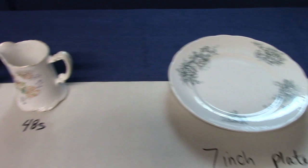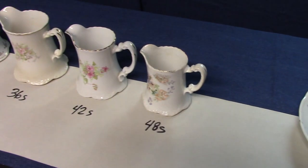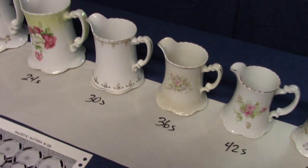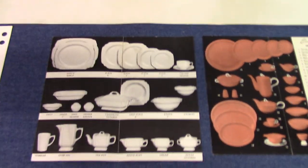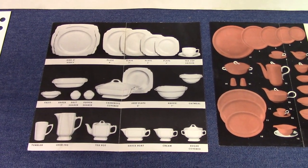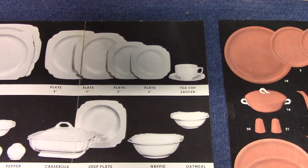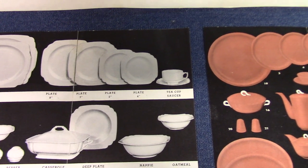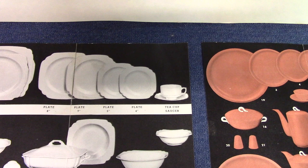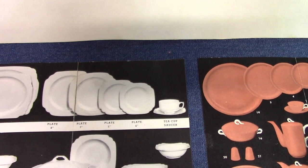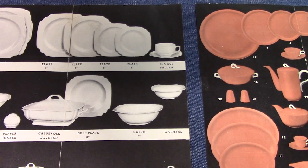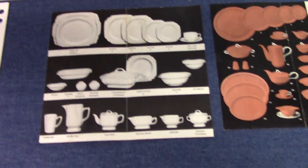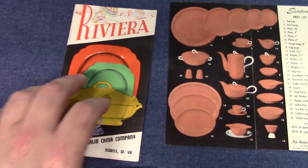One of the reasons they called for abolishment was because of pricing, but also because of the confusion that would arise. Here's a Riviera brochure — you can see we've got the 8 inch plate, the 7 inch plate, the 5 inch plate, and the 4 inch plate. Those who collect Riviera know those are trade sizes — it's actually closer to 10, 9, 7, and 6. The deep plate is listed as 6 inches but is actually closer to 8 inches. So a consumer would have received this pamphlet with everything listed in trade sizes.